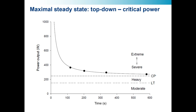Critical power gives additional information if you're interested in performance within the severe domain — you can use the mathematical model to predict that. It's a little more information-rich if you're exercising in the severe domain, whereas you might prefer the maximal lactate steady state if you want to know the envelope of the heavy intensity domain — for example, if you're a marathon runner not expecting to spend significant time in the severe domain.